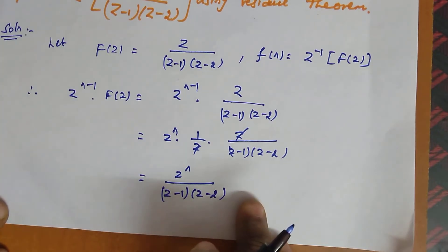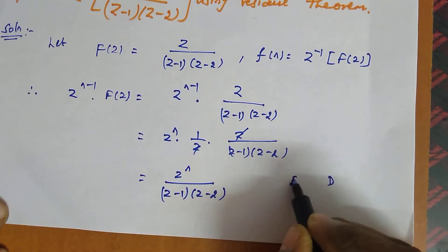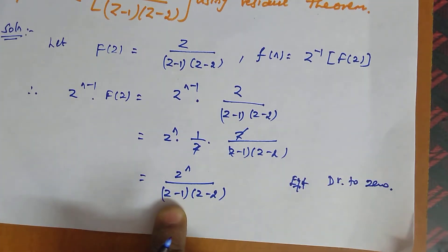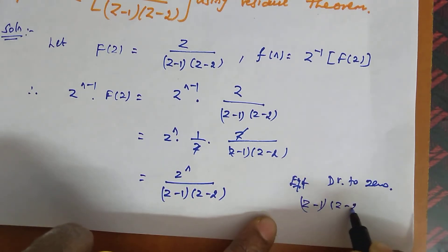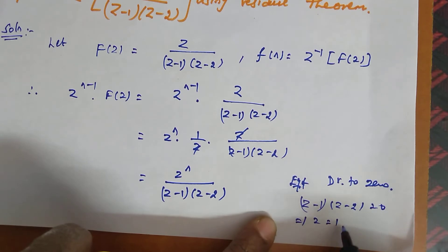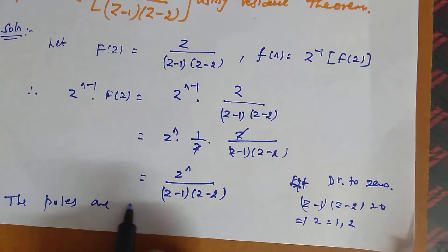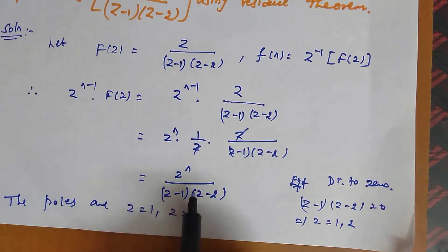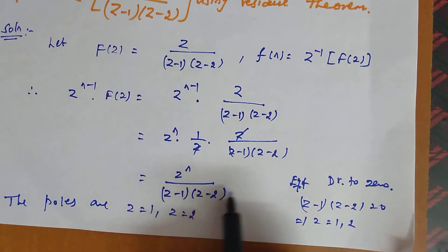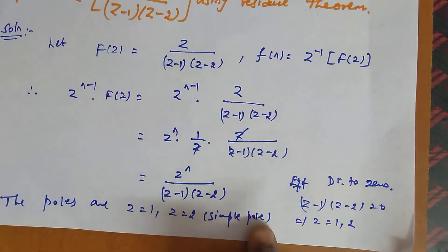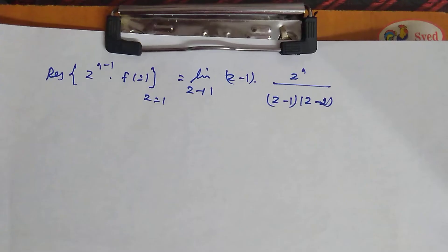To find the poles, we equate the denominator to zero: (z−1)(z−2) = 0, which gives z = 1 and z = 2. The degree of (z−1) is 1 and the degree of (z−2) is 1, so both are simple poles. If the degree were 2, it would be a pole of order 2; degree 3 gives a pole of order 3. In this problem, the poles are simple poles.